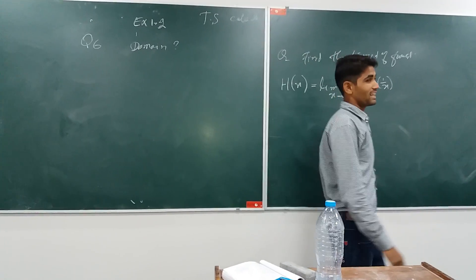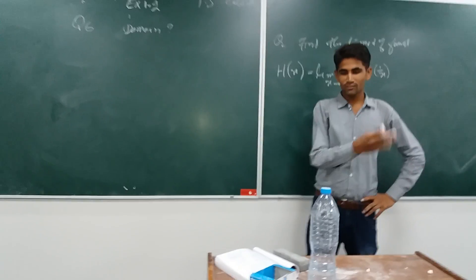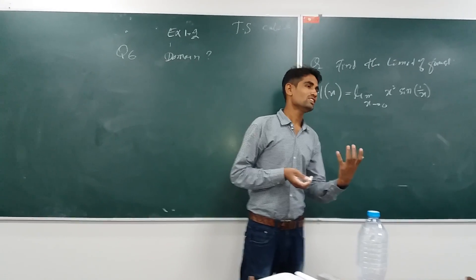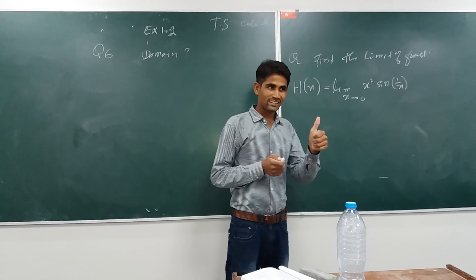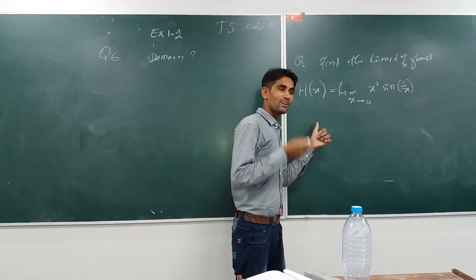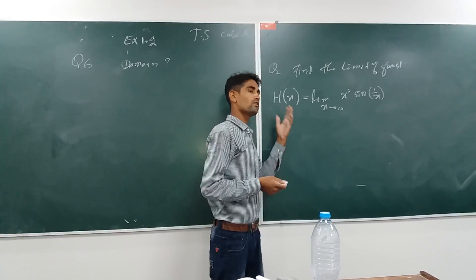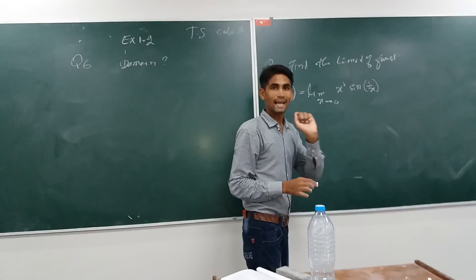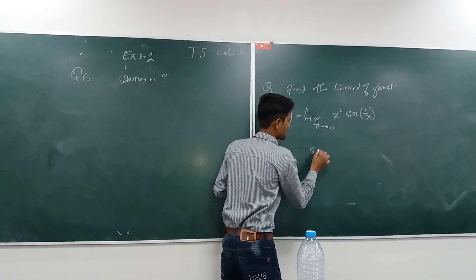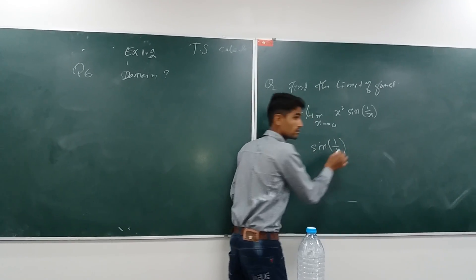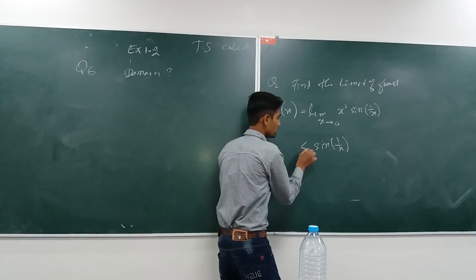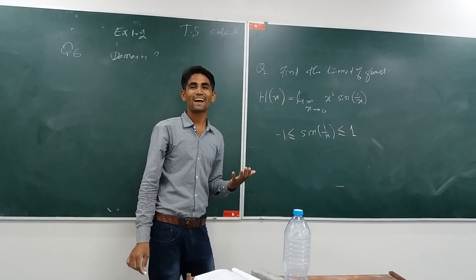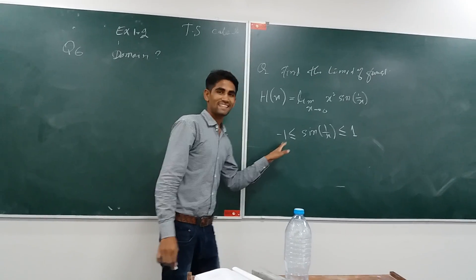This is quite a very interesting problem for you. Now we are going to solve this problem. Here is the technique: we let that sine of 1 upon x is between minus 1 and 1, and minus 1 and 1 are also included — this is an inequality.